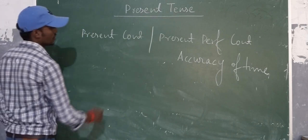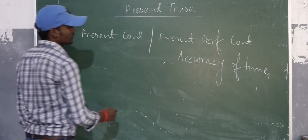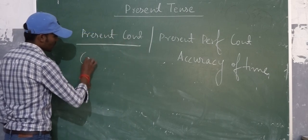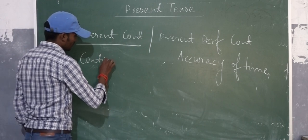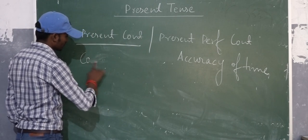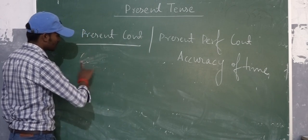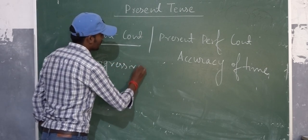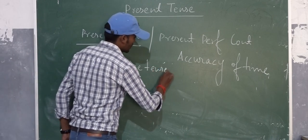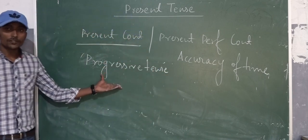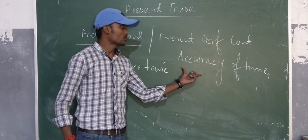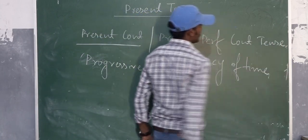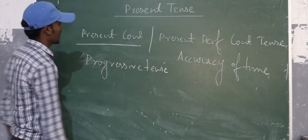Present Continuous shows only continuity. It is also known as Progressive. It only shows continuity. Present Perfect Continuous shows accuracy. It shows accuracy of time.